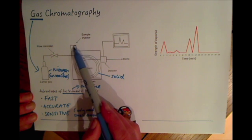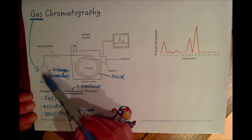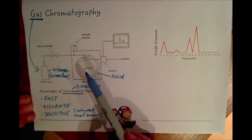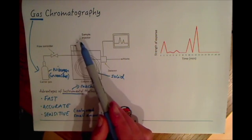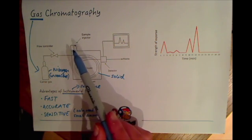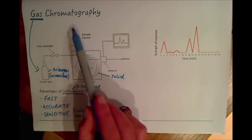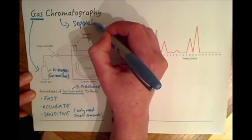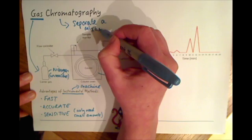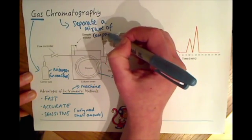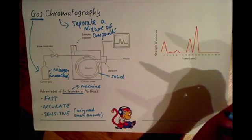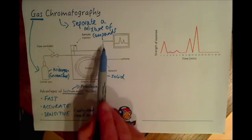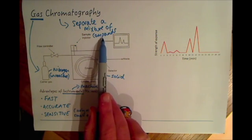The urine will be placed in the top and probably vaporized into a gas itself. Then this carrier gas pushes the urine sample through the machine and out the other side. The sample is a mixture of different compounds that you want to separate — that's the whole point of gas chromatography. All the compounds don't come out at the same time; that's how they're separated.